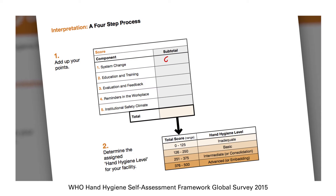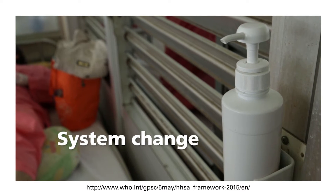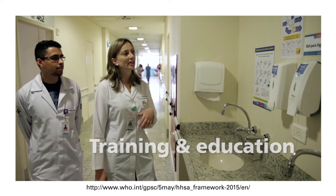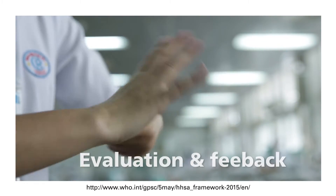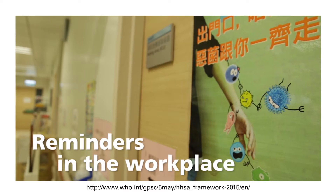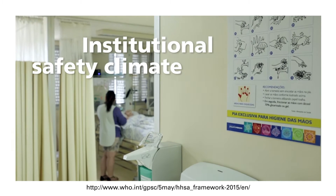The five components of the scoring system reflect the five elements of the WHO multimodal hand hygiene improvement strategy: system change, training and education, compliance monitoring and performance feedback, reminders in the workplace, and institutional safety climate.